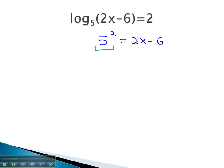You'll notice that we can evaluate the 5 squared to get 25 equals 2x minus 6, and this gives us a simple two-step equation, which we can solve. We solve by adding 6 to both sides. This gives us 31 equals 2x.